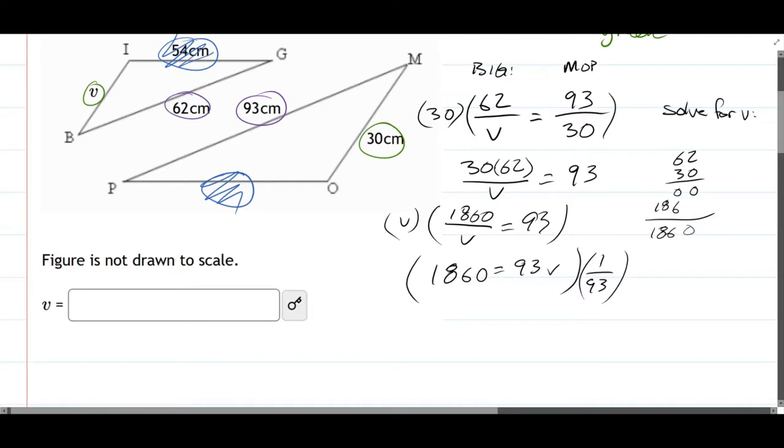So we'll cancel 93 on the right. And on the left, we have 1860 divided by 93, and that's V. I'm definitely not going to do this division. But you do that division, you enter that right here. And that should be your corresponding side.